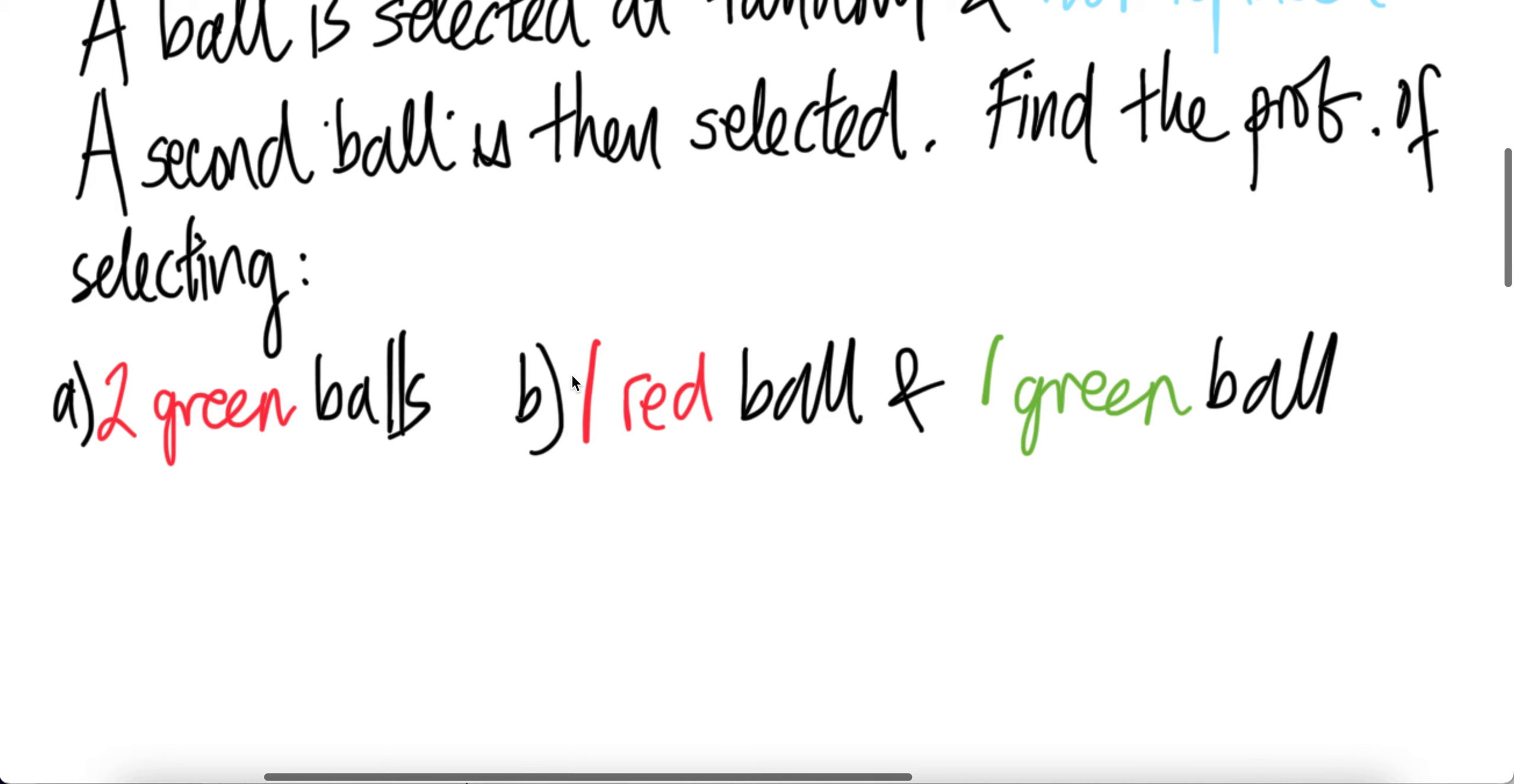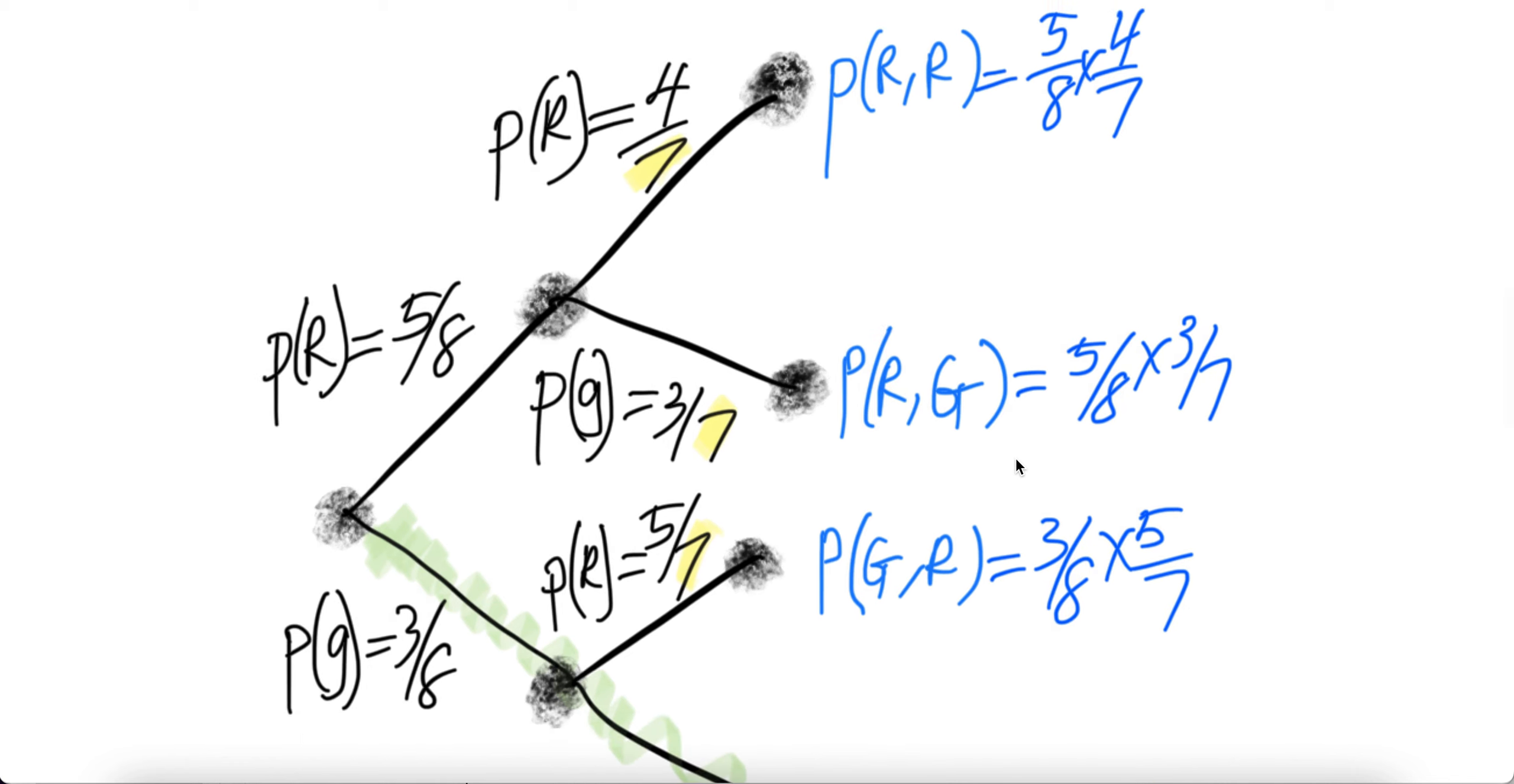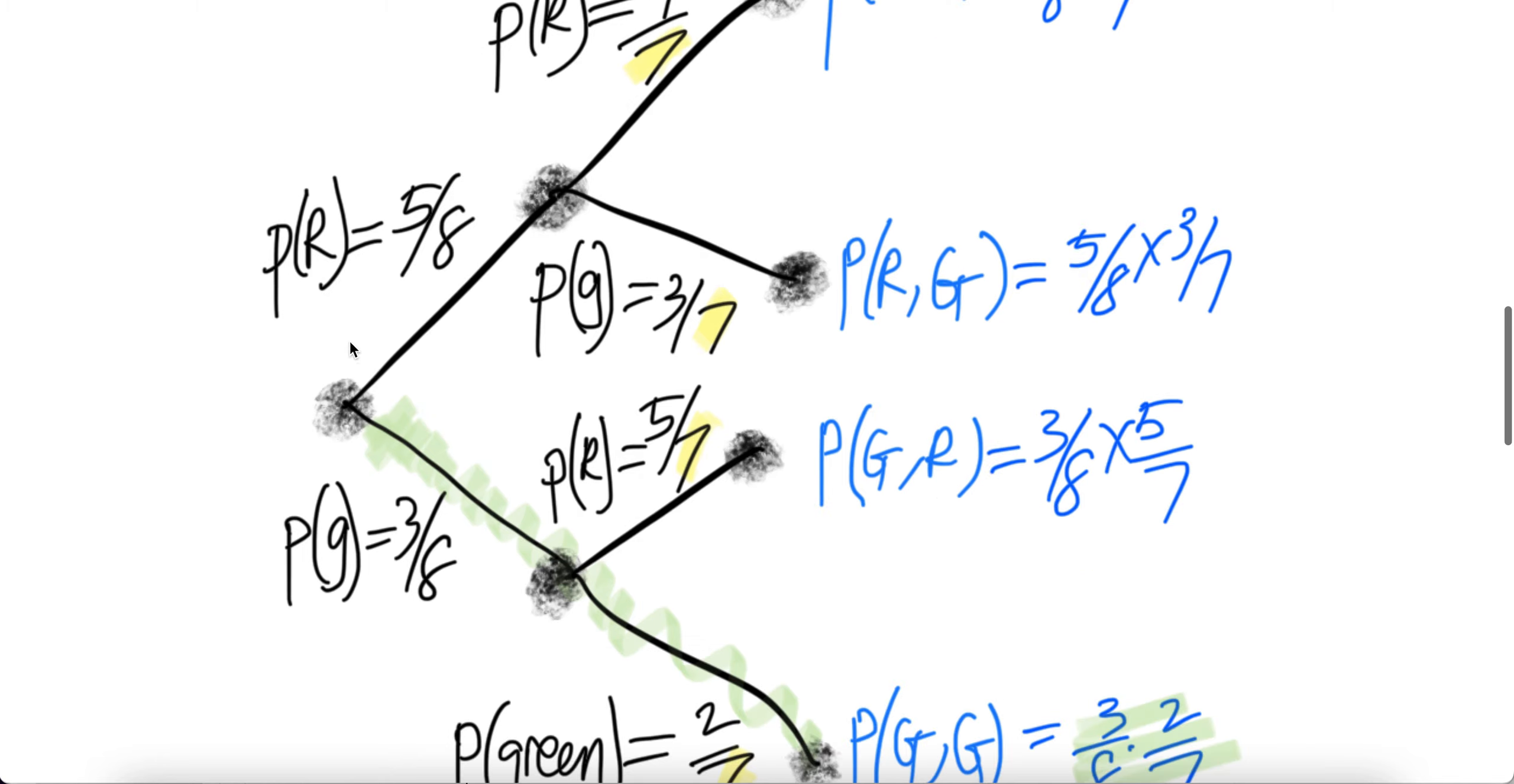Part B. One red ball and one green ball. One red ball and one green ball. Here, red ball and a green ball. So the probability is here. You can get a green first followed by a red, right? So red, green, one red ball and one green ball, or green, red, one red ball and one green ball. So there are two paths you can go.